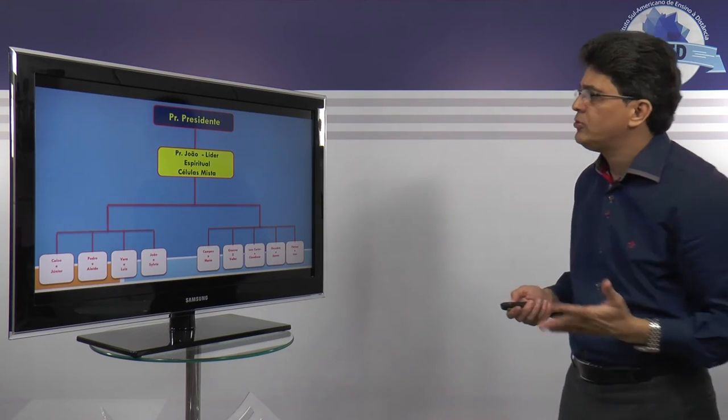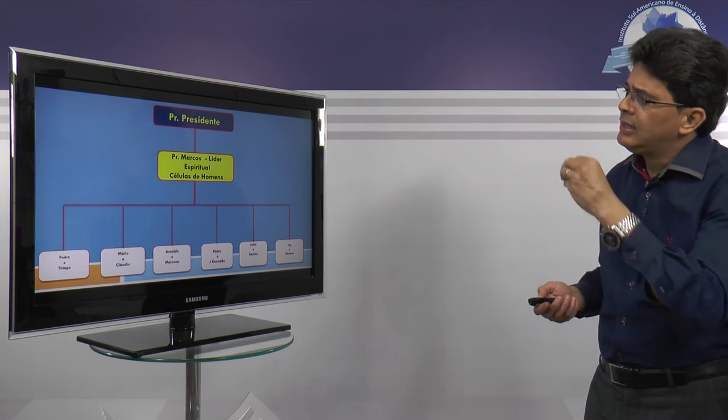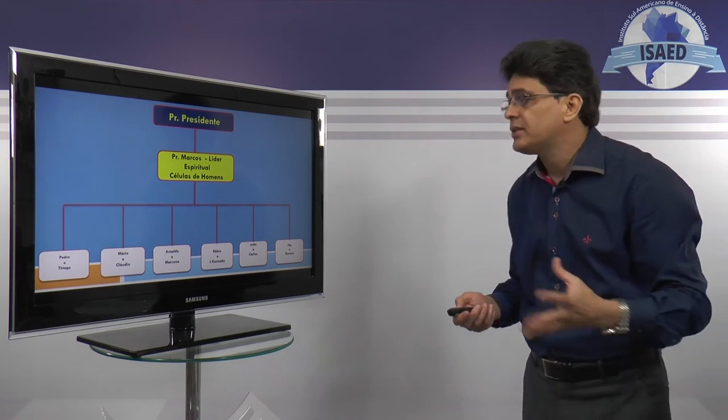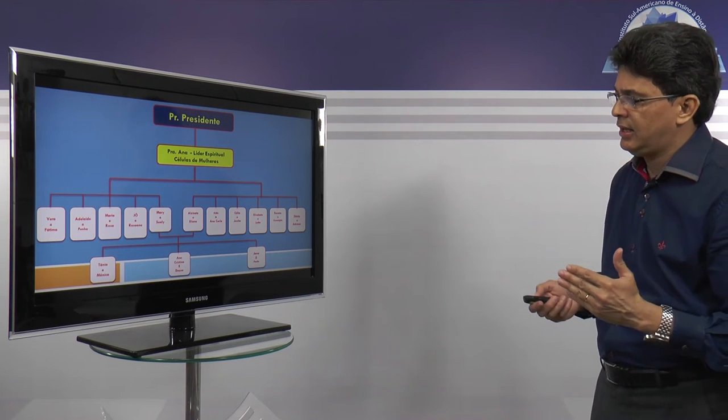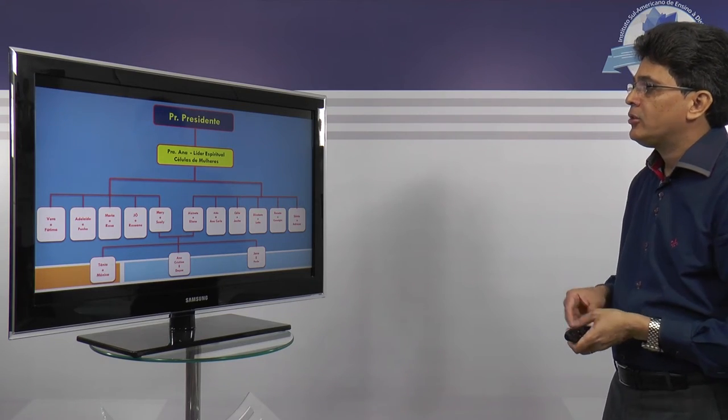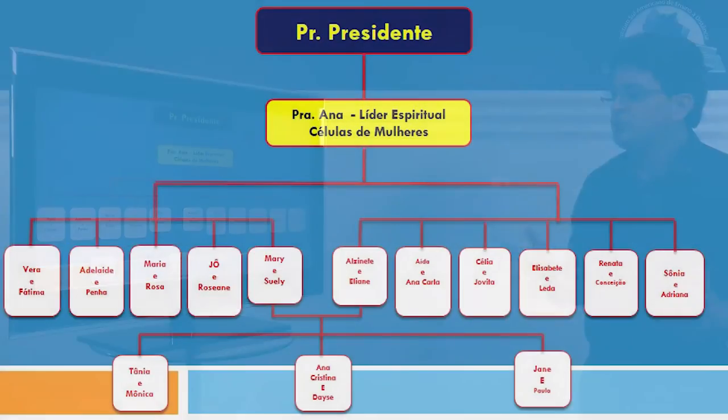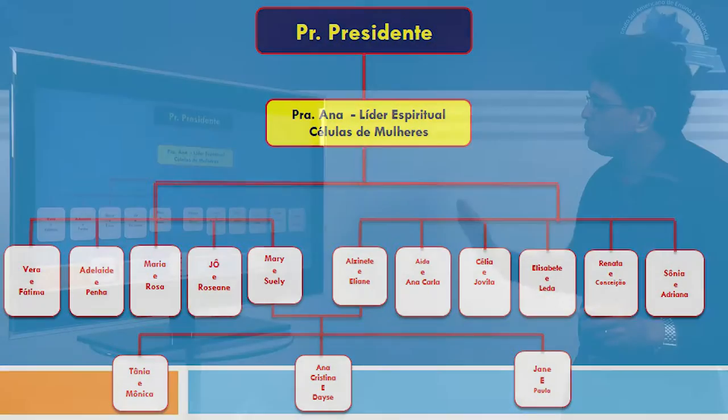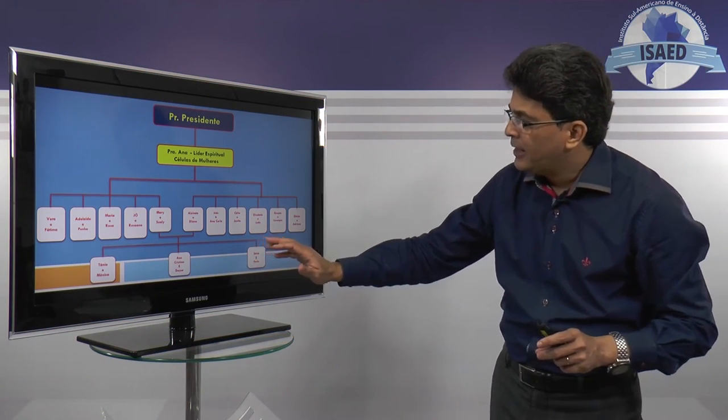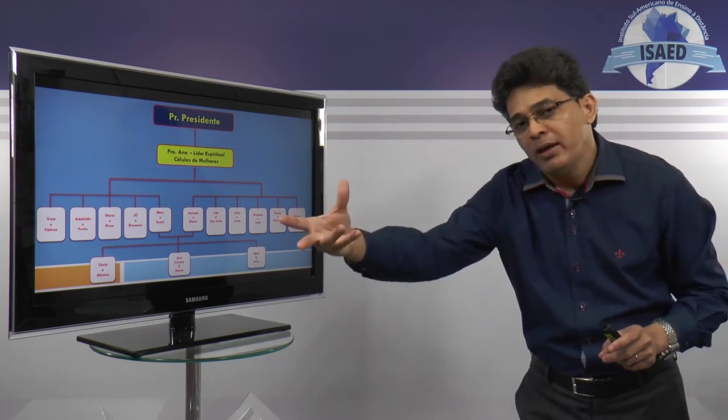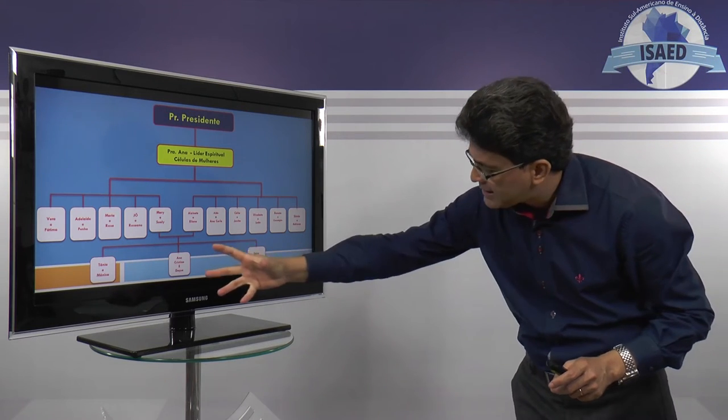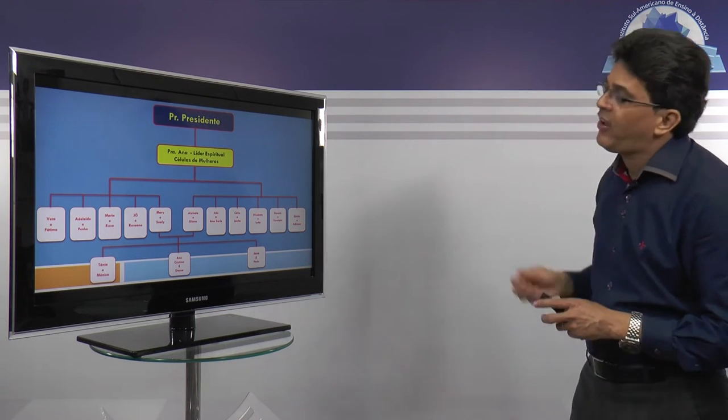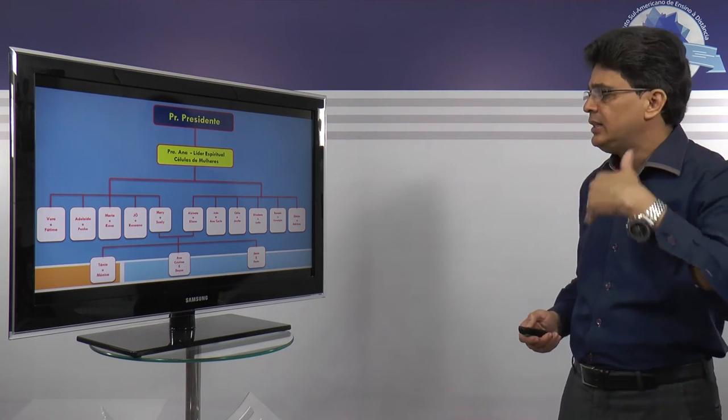Isso aí é basicamente de uma forma ilustrativa, que são exatamente a criação de redes de células de casais, de homens, de mulheres, de crianças, jovens, adolescentes, células mistas. E quando nós olhamos para esse organograma, nós percebemos, e isso é só de forma ilustrativa, que essa rede aqui, por exemplo, de células de mulheres, nós temos aqui as células, o nome dos líderes, e aqui embaixo a gente percebe que essas duas células chegaram a um momento de sua multiplicação, e aí ela passa realmente a gerar novas células a partir da célula-mãe, da célula-matriz. E assim sucessivamente vai ocorrendo nas demais redes, nesse processo da multiplicação.